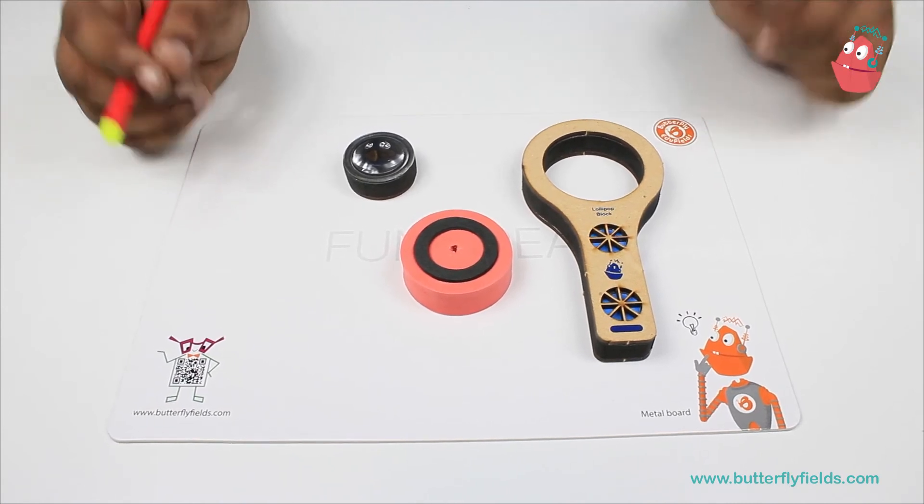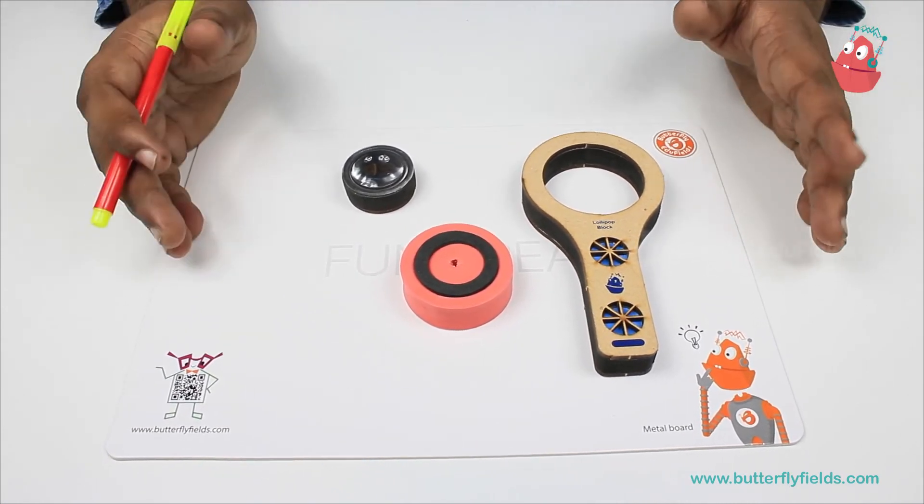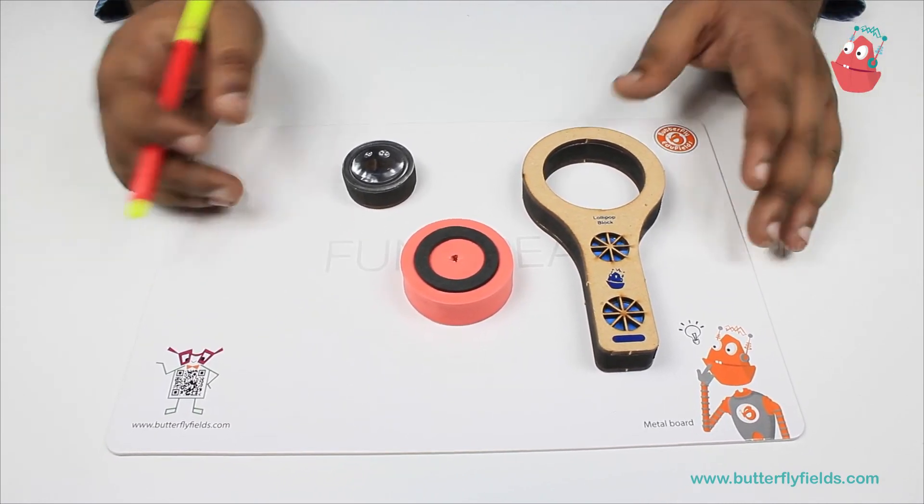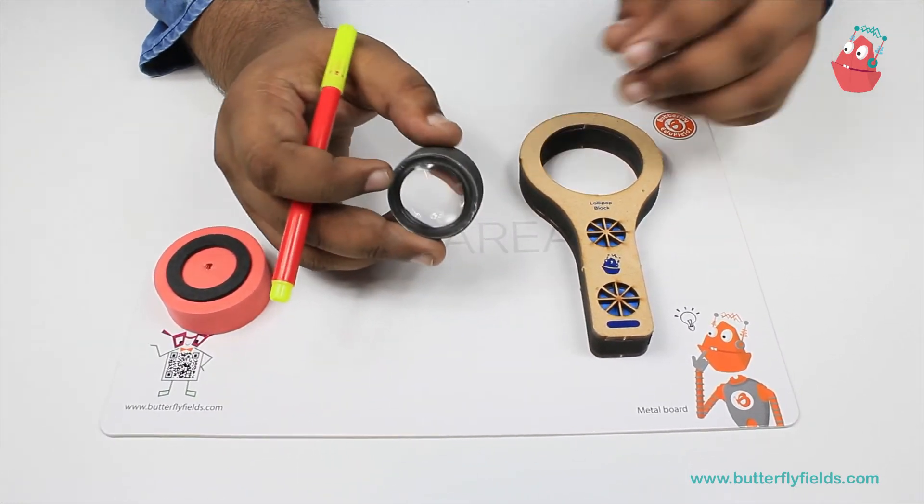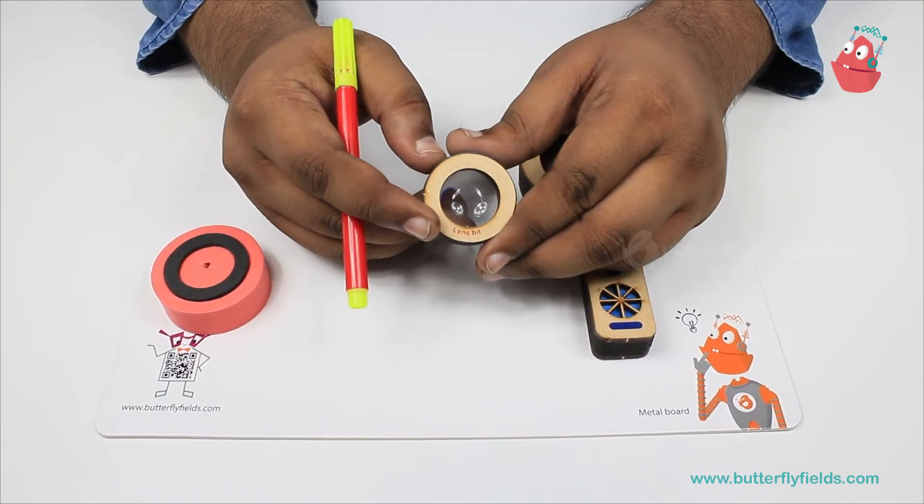You are able to see the reverse fish because of the phenomenon known as refraction. It also happens in lenses. So, you have a lens bit in the kit.